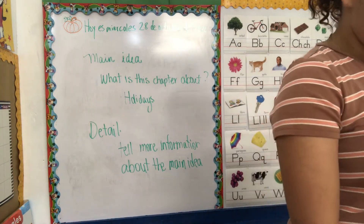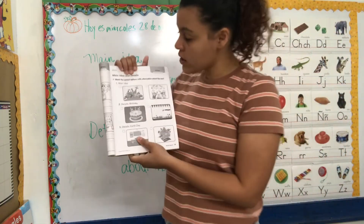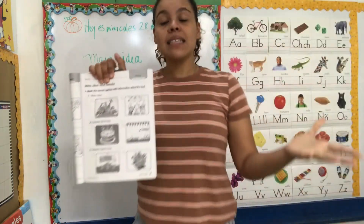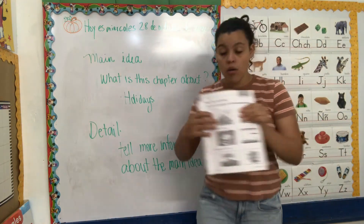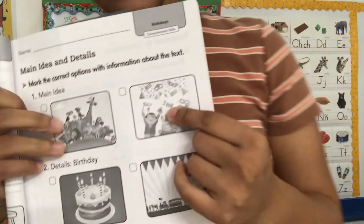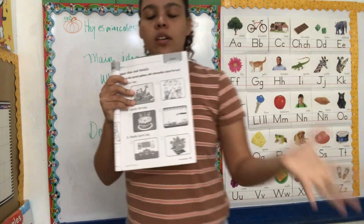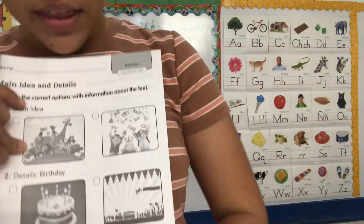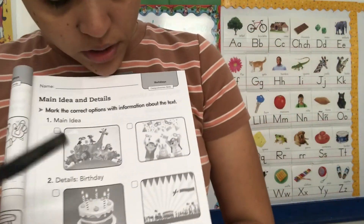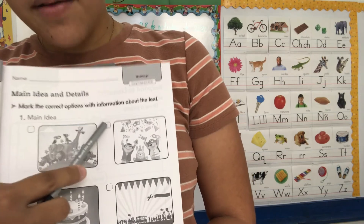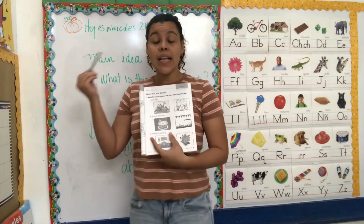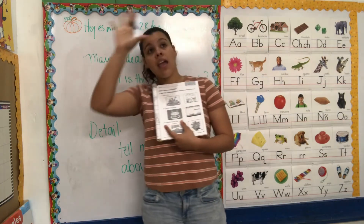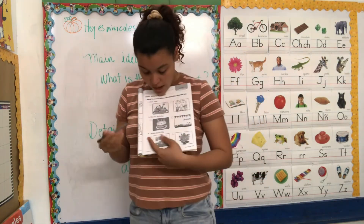Now, you're going to page 19 and you are going to mark the correct option with information about the text. Main idea — ¿de qué se trata el capítulo? ¿Cuál es este chapter about? ¿Se trata de los animales o se trata de días festivos? Se trata de celebraciones y días festivos. We're going to mark with our pencils this one. Details — I told you that details support the main idea.